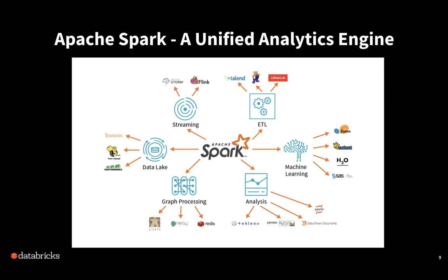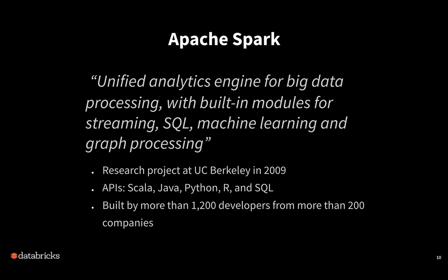This is our vision here at Databricks. Apache Spark is a unified analytics engine for big data processing with built-in modules for streaming, SQL, machine learning, and graph processing. It started back in 2009 — just a little over 10 years ago — as a research project. Since then, it has taken the world by storm as one of the de facto technologies for dealing with big data processing at scale, due to its high performance and throughput.